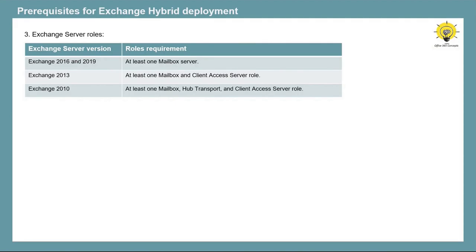The next prerequisite is Exchange Server roles. If you are running Exchange 2016 or 2019, you need at least one mailbox server installed. If you are running Exchange 2013, you need to install at least one mailbox role and one client access server role, either on the same server or on separate servers. And if you are running Exchange 2010, at least one mailbox role, one hub transport role, and one client access role should be installed.